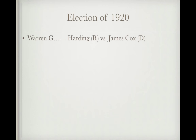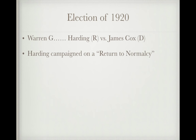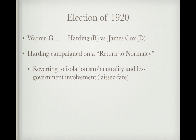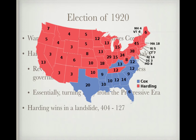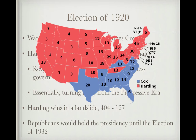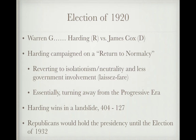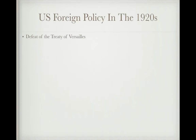In the Election of 1920, Warren G. Harding (Republican) ran against James Cox (Democrat). Harding campaigned on a 'Return to Normalcy,' meaning a return to isolationism, less government involvement, and laissez-faire economics — essentially an undoing of the Progressive Era. As shown by the electoral college map, Harding won in a landslide, winning nearly every state except those in the South, beating Cox 404 to 127. Republicans would hold the presidency throughout the rest of the 1920s until the election of 1932.